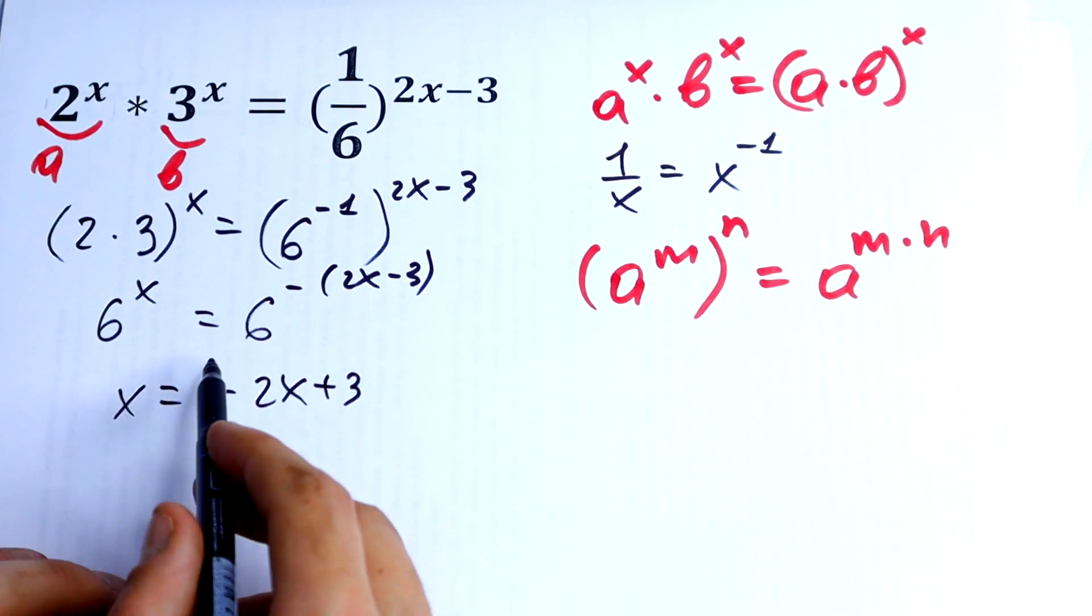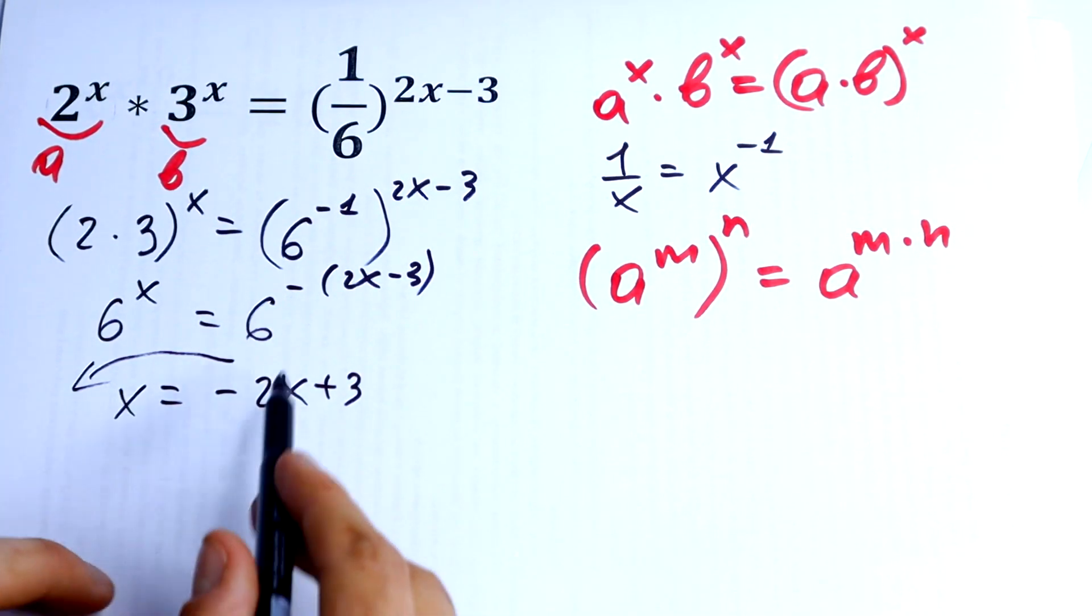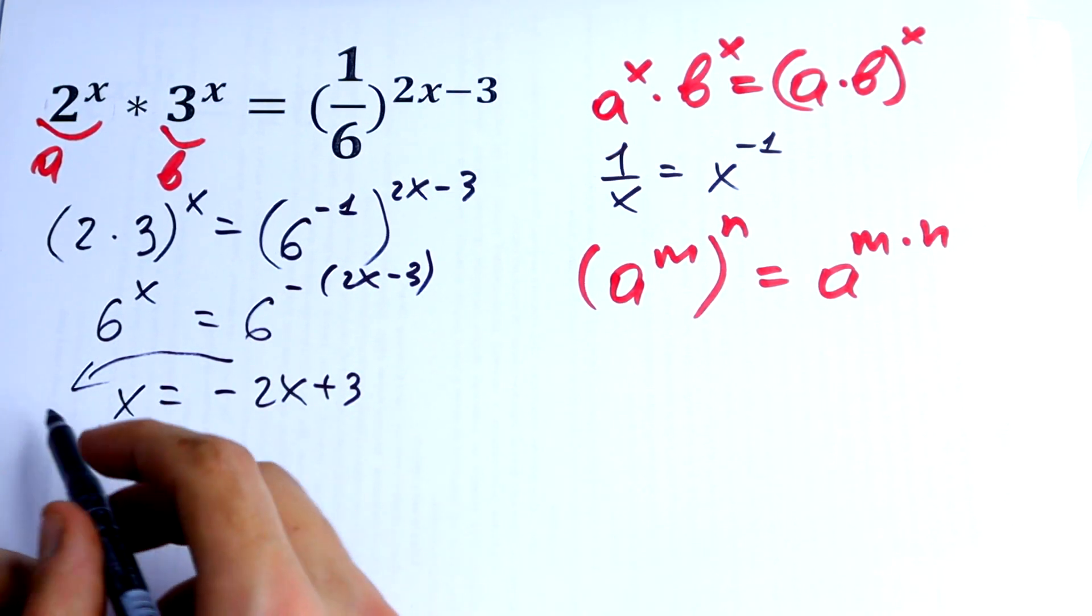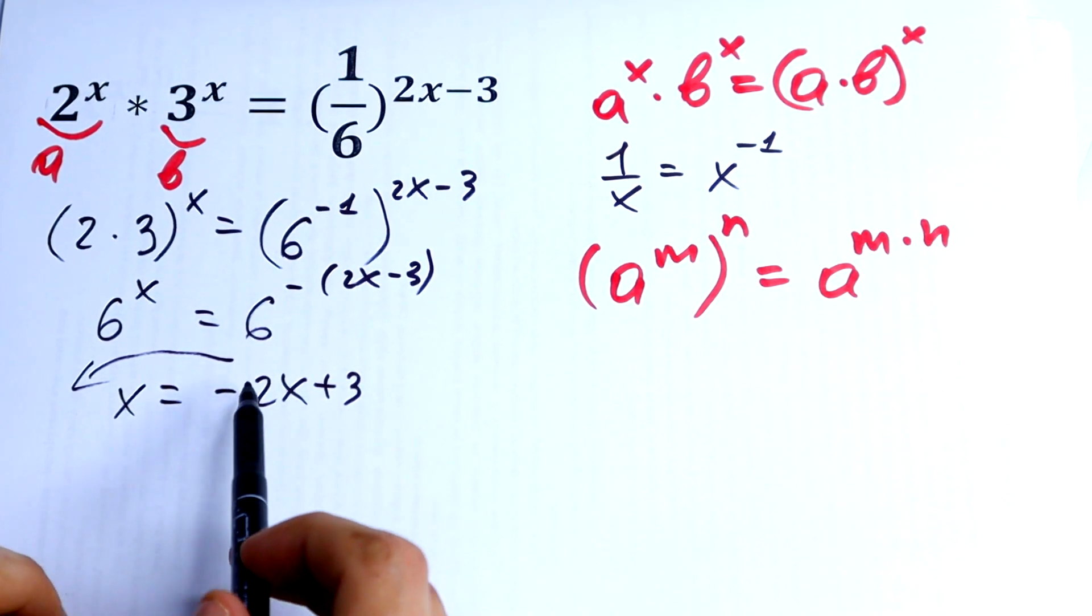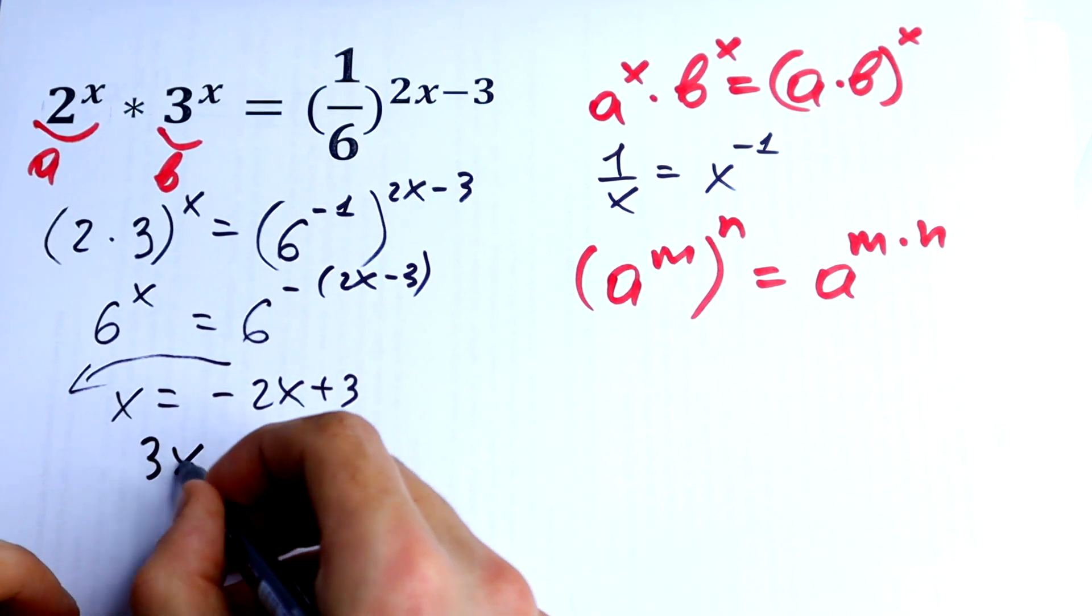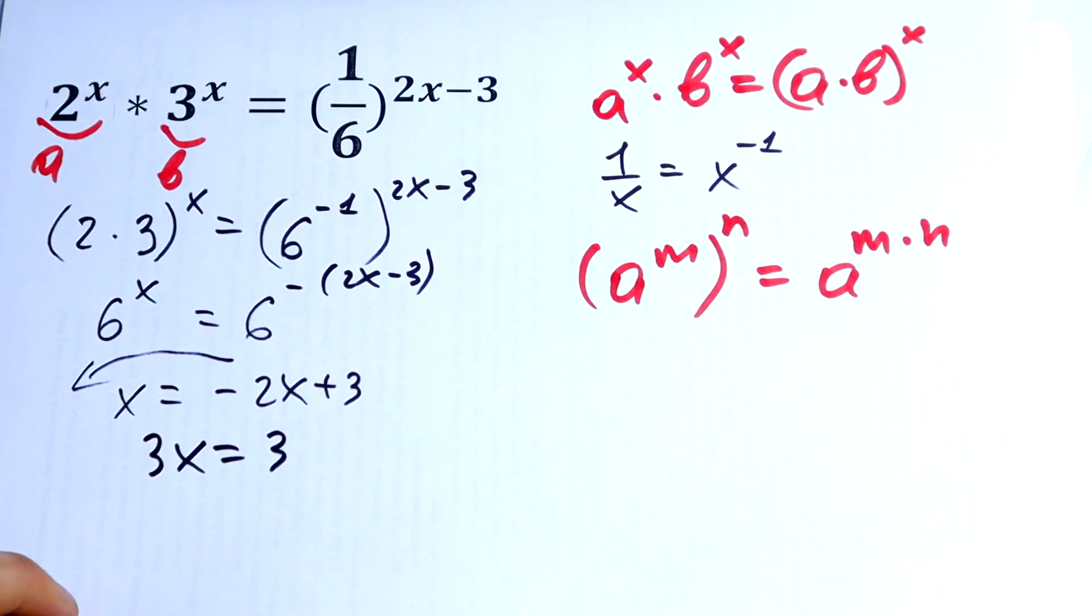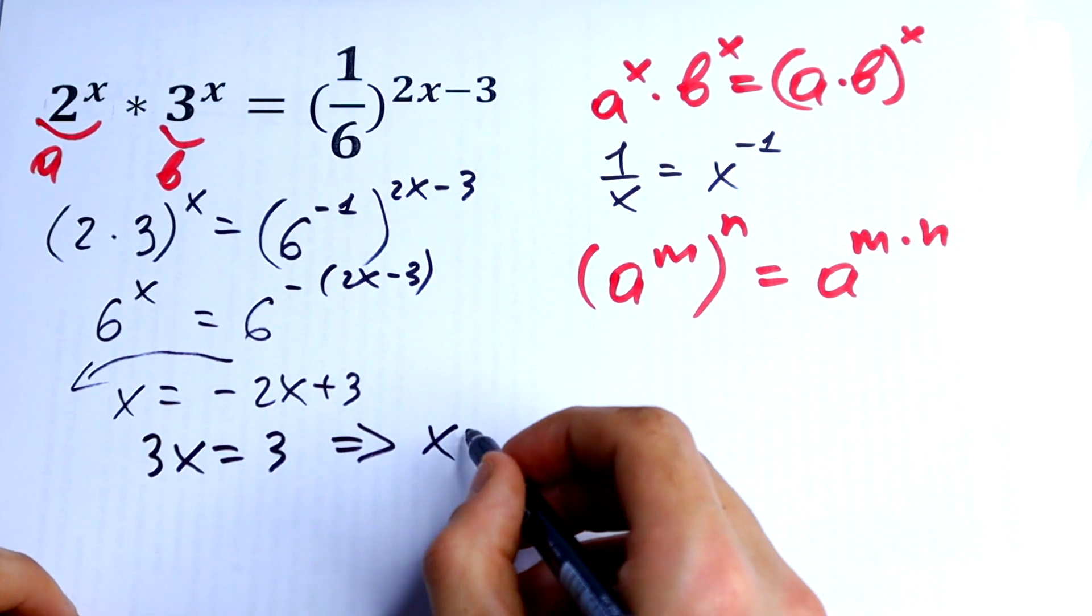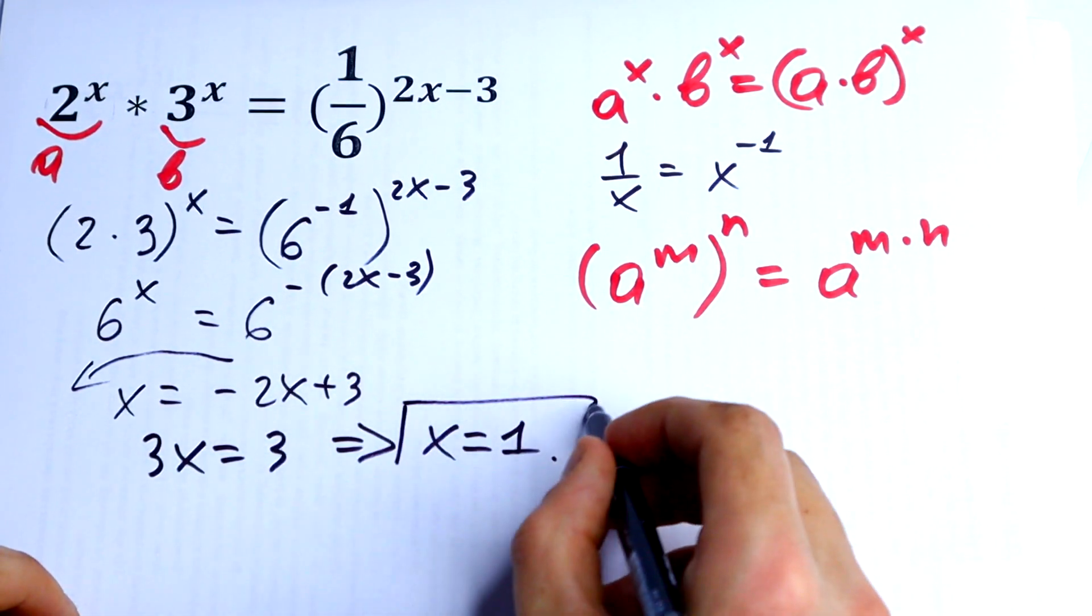This is simple algebra. Add 2x to both sides: x + 2x equals 3, so 3x equals 3. Therefore, x equals 1.